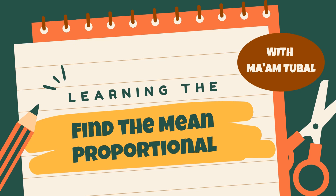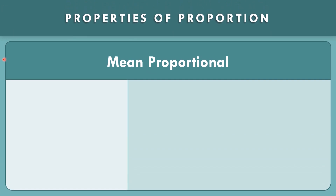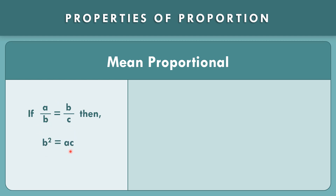Let us find the mean proportional. One of the properties of proportion is the mean proportional. If a over b equals b over c, then b times b, that is b squared, equals a times c, that is ac. If we get the square root on both sides, that becomes b equals the square root of ac.